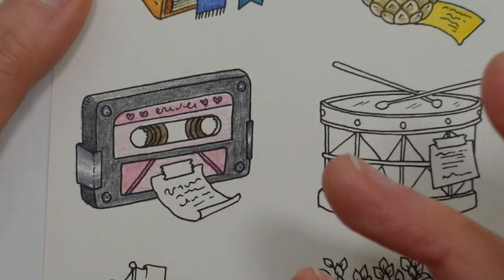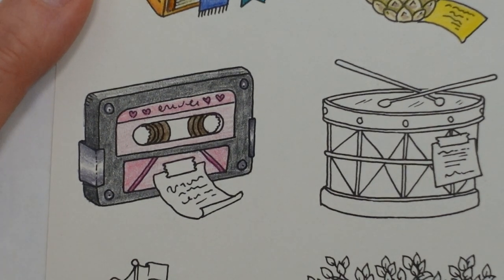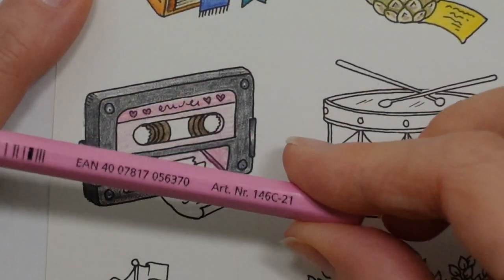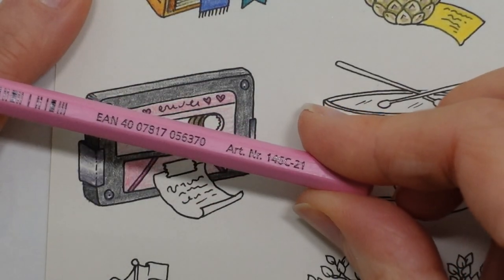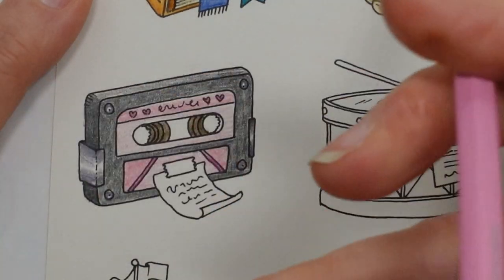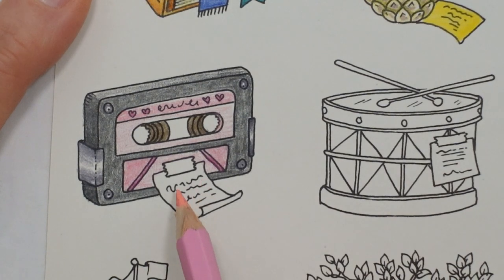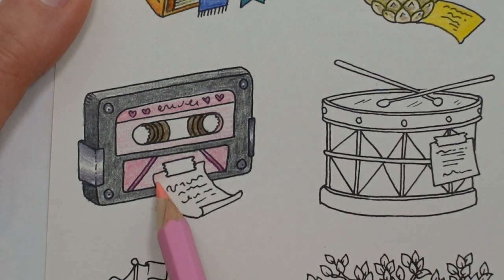And inside the tape case there'd be a little booklet and it would have all the words to the songs and that sort of thing in there so you could sing along. I'm gonna use number 21 which is the light rose just to do that little spool there.